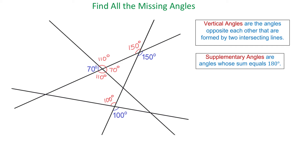The angle of 150 degrees and this angle are supplementary angles, so this angle will measure 30 degrees, and then this one will also measure 30 degrees. Down here, if this one is 100 degrees, then this one will be 80 degrees and this one will also be 80 degrees.